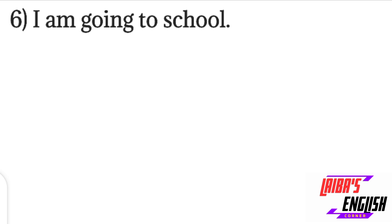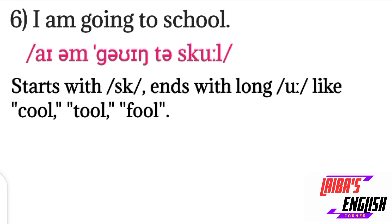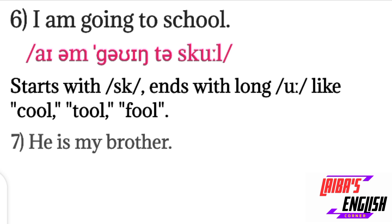The next sentence is: I am going to school. 'I' and 'am' are practiced before. For 'going': G sound, then the 'oh' diphthong, then a short 'e' sound and 'ing' sound. For 'to': when 'to' is in its strong form, we write T and a long U sound, but here it is used in its weak form, so the schwa sound is used instead. Then 'school.'